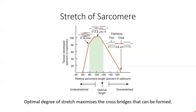Lastly, we have the length or stretch of the sarcomere or the muscle, often referred to as the length-tension relationship. There is an optimal level of stretch within a sarcomere where the maximum number of cross bridges can form to produce the greatest amount of force. Looking at this figure, when a muscle is already partially contracted — understretched — the sarcomere is quite short and the thin filaments are already overlapping one another, which reduces the number of actin molecules that can bind to myosin and produce cross bridges.